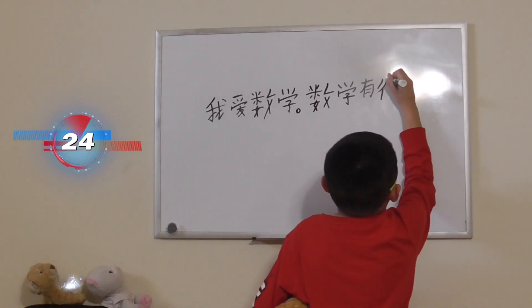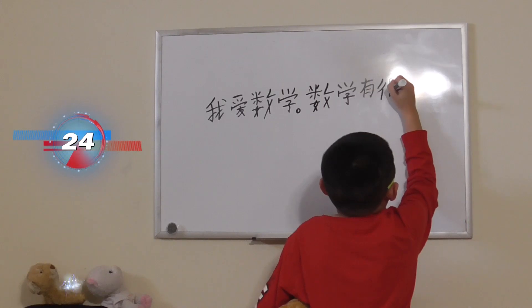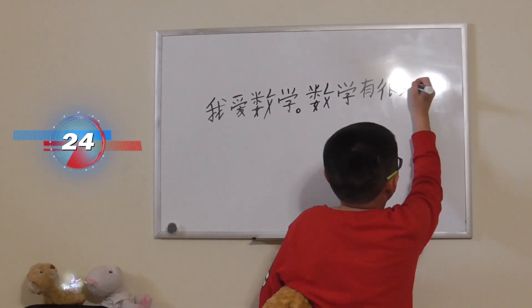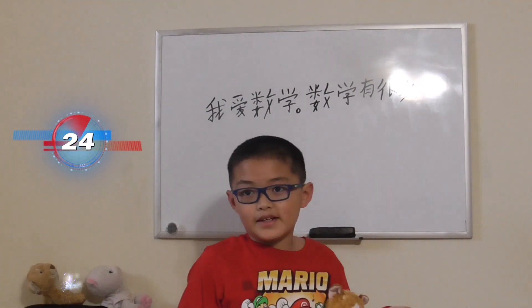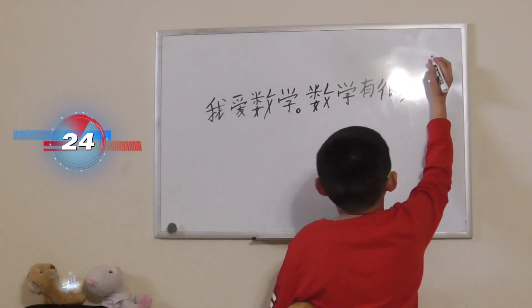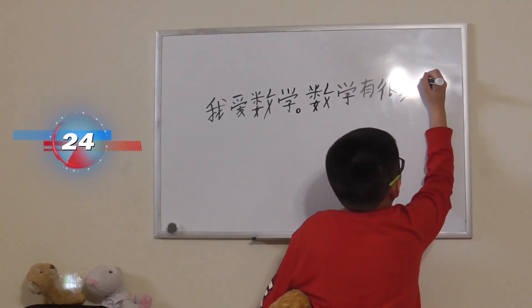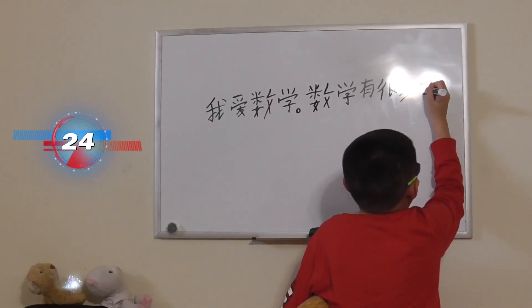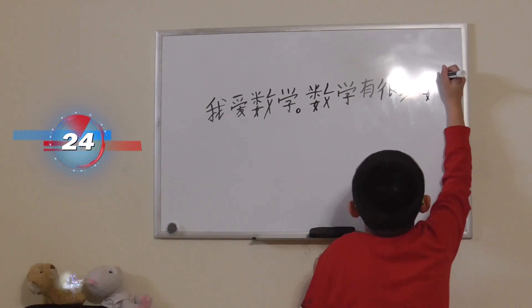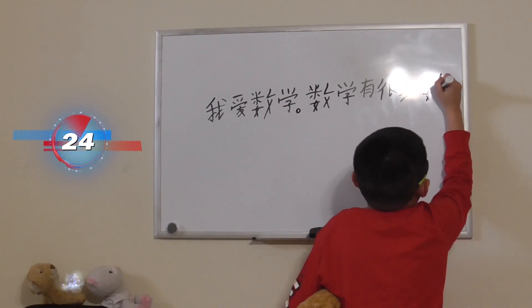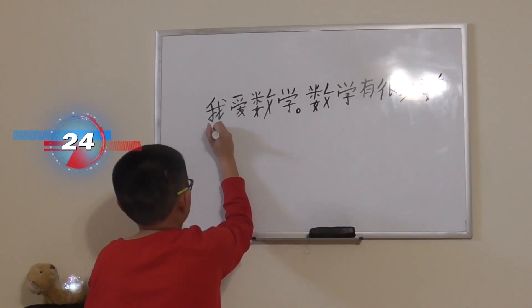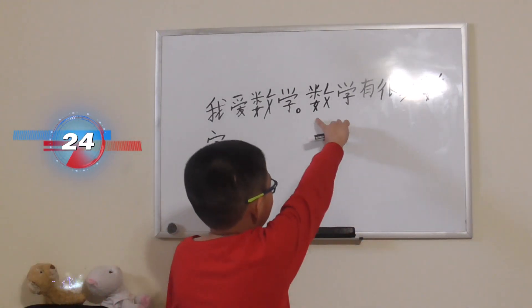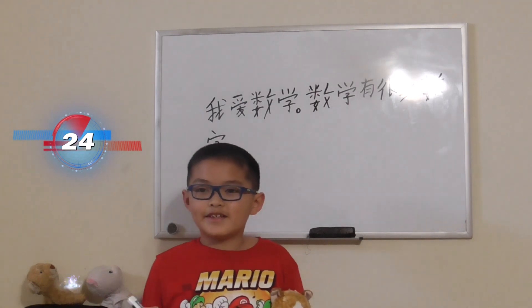很, means very. 多, means many, so very many. 数字, means numbers. So in math there are very many numbers.